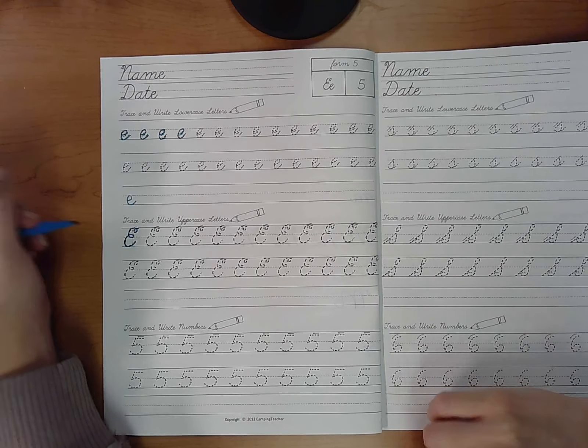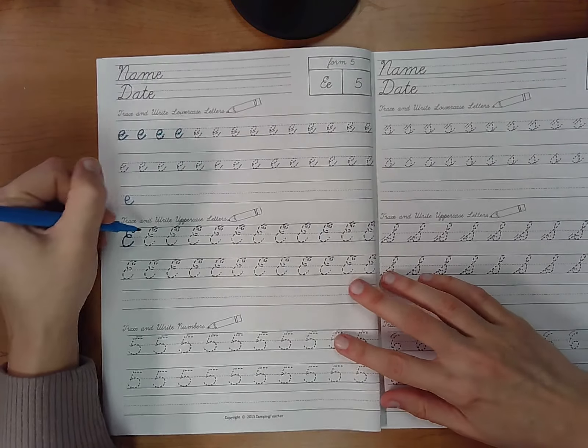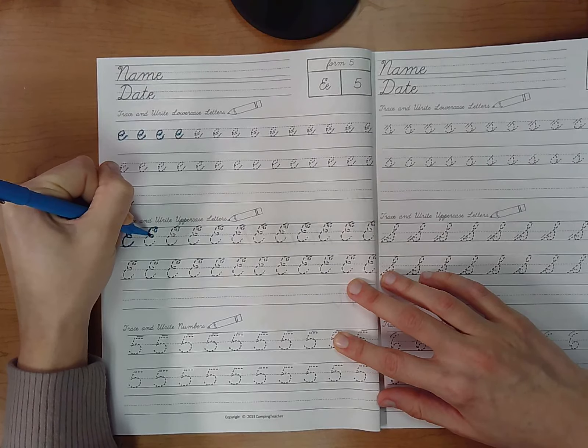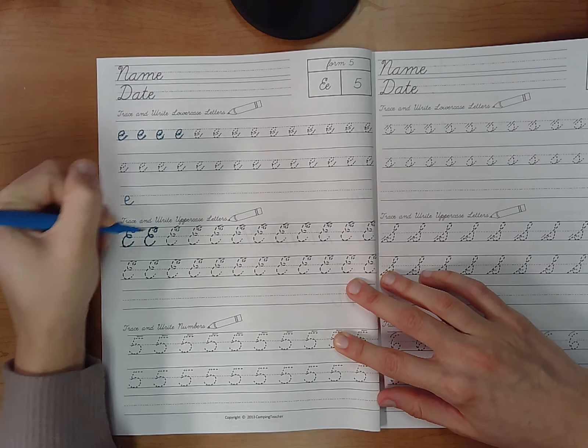Remember when you do it on your own the top curly Q is optional. Start at the top. Go around and then make your Es. There's a loop right there. Just like that.